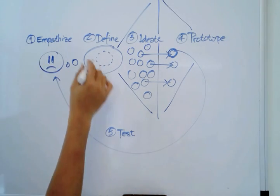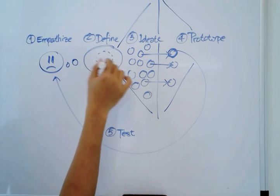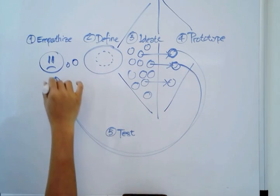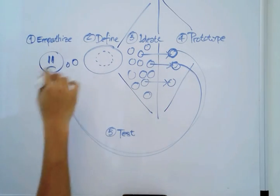And if this fails, then we understand that we can define the problem a little better and we choose the next one. Same thing. Both of them are tested and once we have the winning one, we actually produce it.